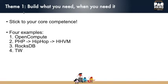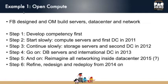Basically, stick to your core competence. Once you're successful and have capital, then you can start looking at other things, but always stick to your core competence. I'll give four examples: Open Compute, the progression from PHP to HipHop to HHVM, RocksDB (which I'll probably skip for time), and a counter-example. Most of the presentation will focus on things that went well — we can all meet separately to talk about things that went poorly.